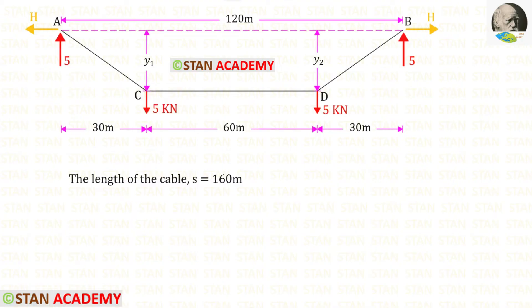Now, we are going to find the horizontal thrust H. To find the horizontal thrust, we have to find the dip y1 or y2. The total length of the cable is given as 160 meters. We know this length, that is 60 meters. We have to find the length of AC and DB. We know that this cable structure is symmetrical, so the length of DB should be the same. Let us keep both of the lengths as x.